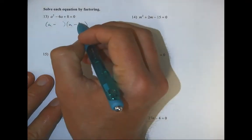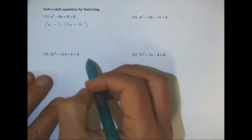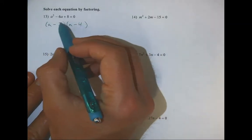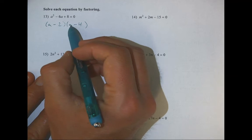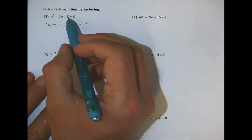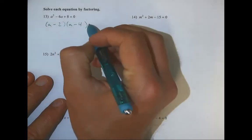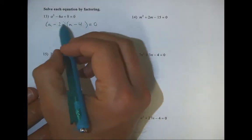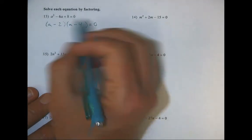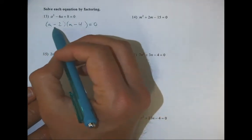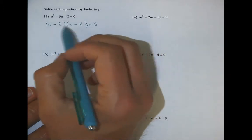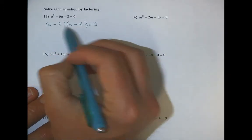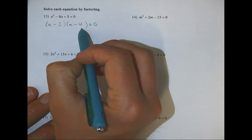That's a four and a two. Since it multiplies to a positive but adds to a negative, I know I've got two negatives. So it's negative four and negative two — that makes negative six, and when I multiply it's positive eight. So this is factored and done. Now I need to figure out what numbers I'd plug in to make the product equal zero when I multiply these two factors together.